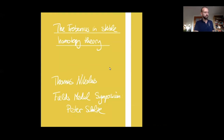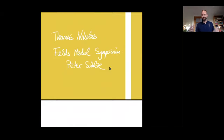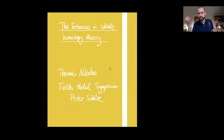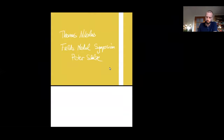We'll have Thomas Nicholas from University of Münster talk about the Frobenius in Stable Homotopy Theory. Thank you very much. It's a great pleasure and honor to speak here at this Fields Medal Symposium for Peter Scholze. I'll talk today about something that originated in my joint work with Peter — how one can transport ideas from arithmetic into Stable Homotopy Theory, and specifically the Frobenius operator in Stable Homotopy Theory.